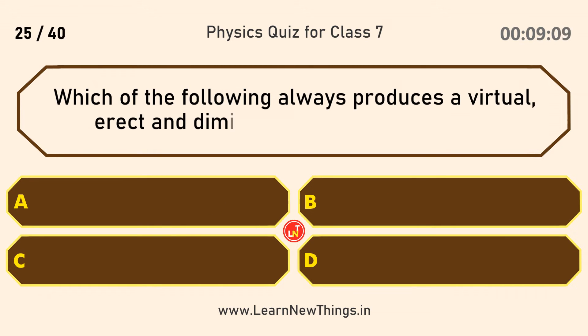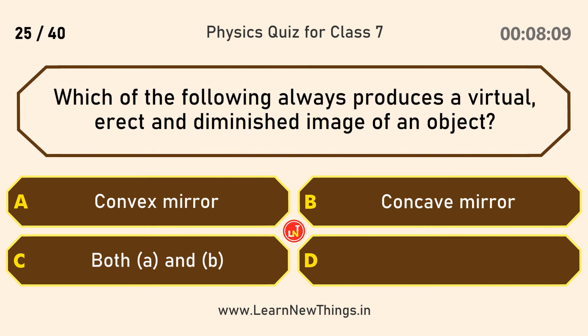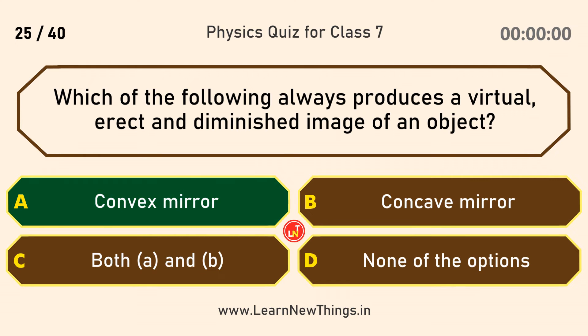Which of the following always produces a virtual, erect, and diminished image of an object? Convex mirror.